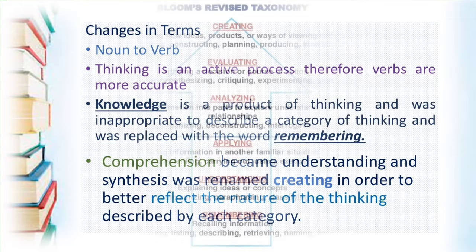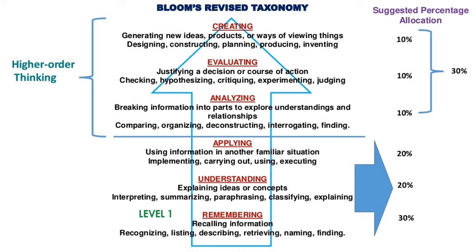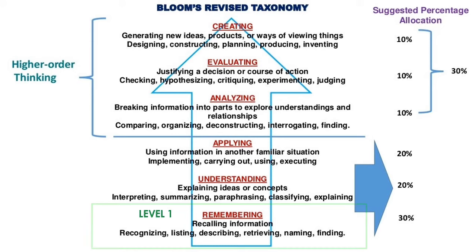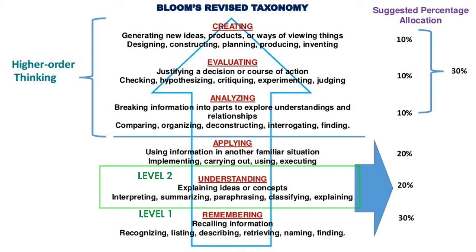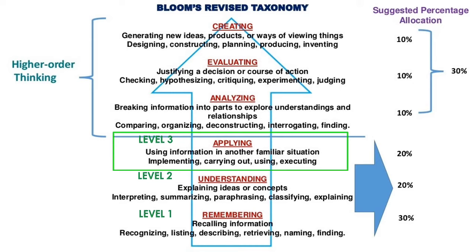Here is Bloom's revised taxonomy. Level 1 is Remembering — recalling information. When your test question measures recognizing, listing, describing, retrieving, naming, and finding skills of the learners, that falls under Remembering. Level 2 is Understanding — explaining ideas or concepts. When test questions allow students to interpret, summarize, paraphrase, classify, and explain, that is Understanding — you measure students' comprehension. Level 3 is Applying — using information in another familiar situation. When students implement, carry out, use, and execute, that is Applying.